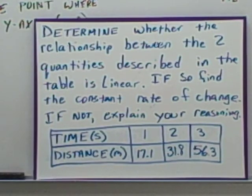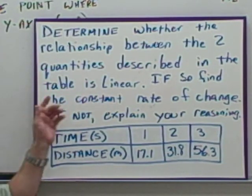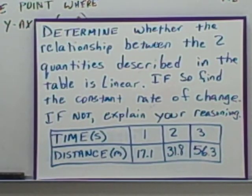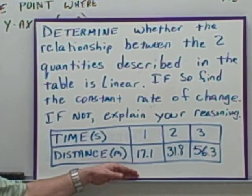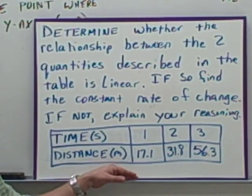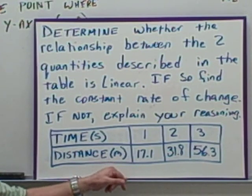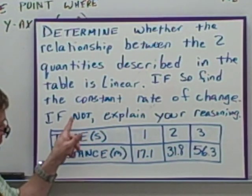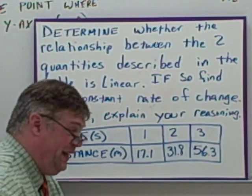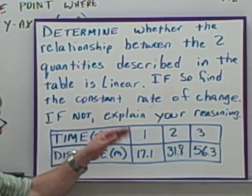Here we're asked to determine whether the relationship between the two quantities described in the table is linear. If so, find the constant rate of change. If not, explain your reasoning. Well, we talked about how to find the constant rate of change, and that's just simply that fraction. So we'd love it if it worked out that way. But I'm telling you right now, this one is not linear. I did that on purpose because I want you to see how to explain your reasoning. That's an important part.